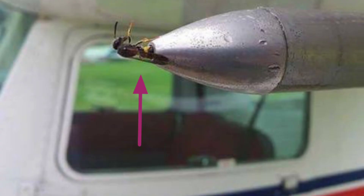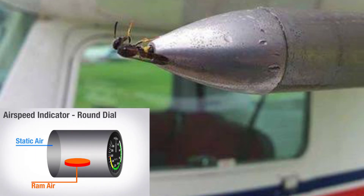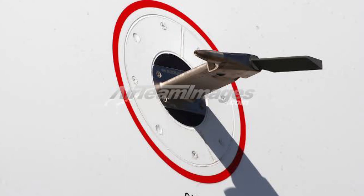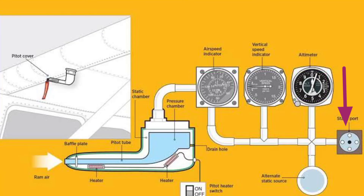A blockage of the Pitot source is not serious, as it will only affect the airspeed indicator — the Pitot source being where ram air enters. However, a blockage of the static source will affect all of the instruments, and it is thus common practice to provide an alternative static supply. Because static pressure is used to measure both the altimeter and vertical speed indicator, a static blockage will affect the whole instrument panel — that is why we use an alternative static source.